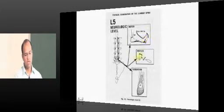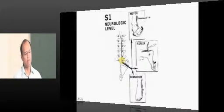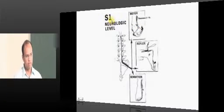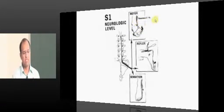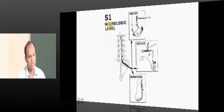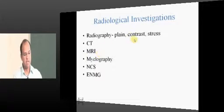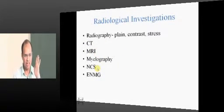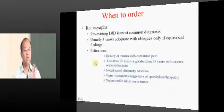For L5, test extensor hallucis longus — there is no jerk for L5, and sensation over the dorsum of the foot. For S1 — if there is a paramedian disc at L5-S1 compressing the S1 root — test the peronei muscles (peroneus longus and brevis), which evert the foot. Ask the patient to evert the foot against resistance; weakness indicates S1 compression. The reflex for S1 is the ankle jerk — if diminished, S1 is impinged. By clinical examination alone, you can identify the level without radiological investigations like X-ray, CT, or MRI.